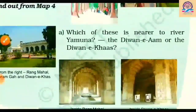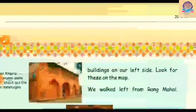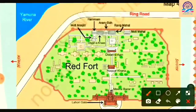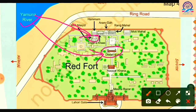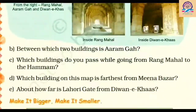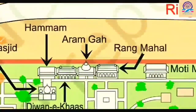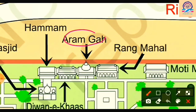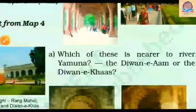Now let's look at the questions for map four. First: which is nearer to the Yamuna River — Diwane Aam or Diwane Khaas? Looking at the map, we can see that Diwane Khaas is nearer to the Yamuna River. Second: between which two buildings is Aram Ghaa? From the map, Aram Ghaa is in between Rang Mahal and Hammam.